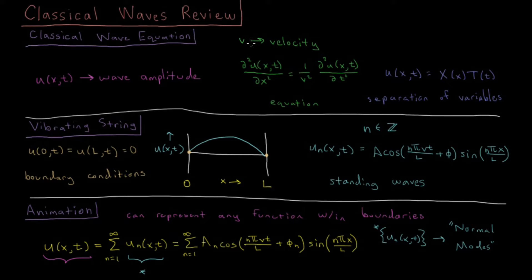And this is going to obey the classical wave equation, where the second partial derivative with respect to space of this amplitude is equal to 1 over velocity squared times the second partial derivative with respect to time. That's the classical wave equation that is true for any classical wave.